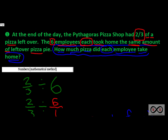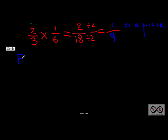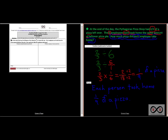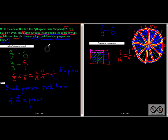Now we have one job left — we've shown our answer in numbers and pictures, and now we write a complete sentence to finish our math job. How much pizza did each employee take home? Each employee took home one-ninth of a pizza pie. We've shown numbers in our mathematical model, pictures in our area models, and words in our complete answer — that makes a well-rounded answer.